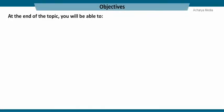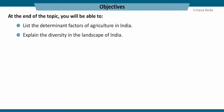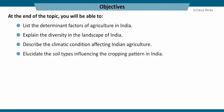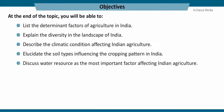At the end of the topic, you will be able to list the determinant factors of agriculture in India, explain the diversity in the landscape of India, describe the climatic conditions affecting Indian agriculture, elucidate the soil types influencing the cropping pattern in India, and discuss water resources as the most important factor affecting Indian agriculture.